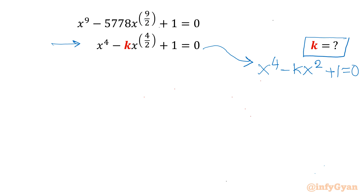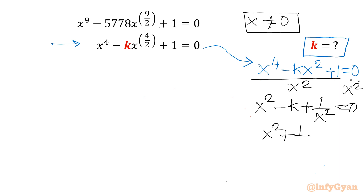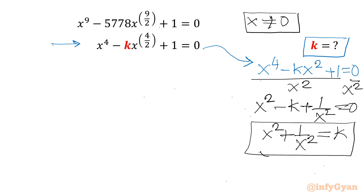If you see the first equation, x equal to 0 is not satisfying, so we conclude x is non-zero. Dividing both sides by x², we get x² minus k plus 1/x² equal to 0, or x² plus 1/x² equal to k. That means we have to calculate the value of x² + 1/x² for our answer.